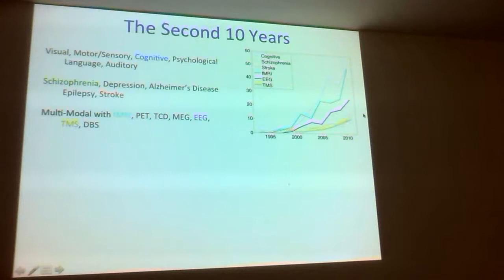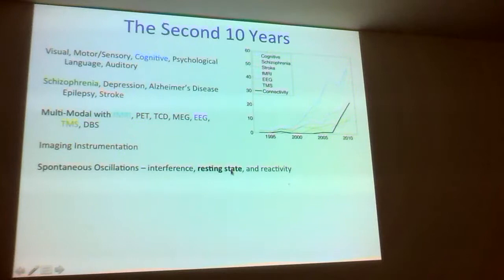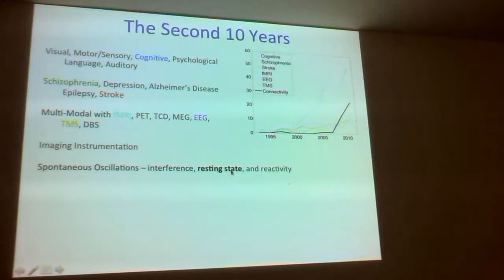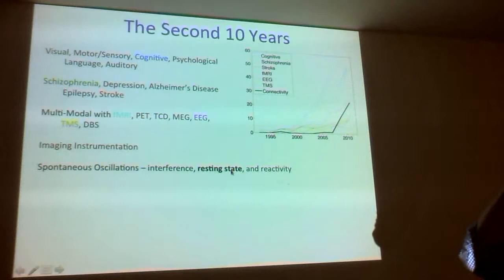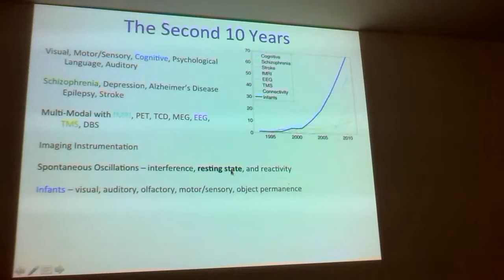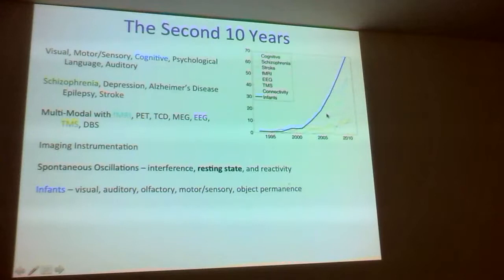Resting state functional connectivity — where you actually measure brain connections just by having a subject do nothing — is exploding in fMRI and now also in fNIRS. Infants are a very important application domain for fNIRS for two reasons: you get much more signal from an infant because their heads and skulls are smaller, and it's very difficult to measure infants with fMRI because they don't sit still in a magnet. Whereas fNIRS is less constrained by the need to stay still.